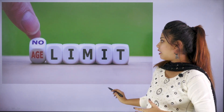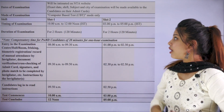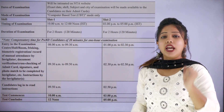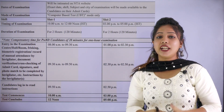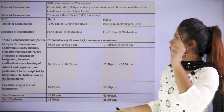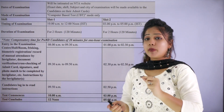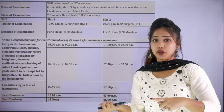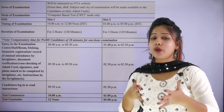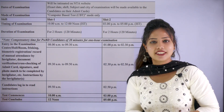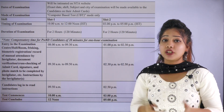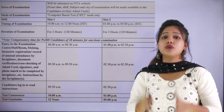Regarding the important dates of CUET PG: the dates of the examination have not yet been intimated; once intimated, we will inform you through our channel. The mode of examination is a computer-based test. The exam will be conducted in Slot 1 and Slot 2. If you come under Slot 1, you must enter your examination hall between 8:00 and 9:30 AM. If you come under Slot 2, you must be within the exam hall between 1:00 and 2:30 PM.